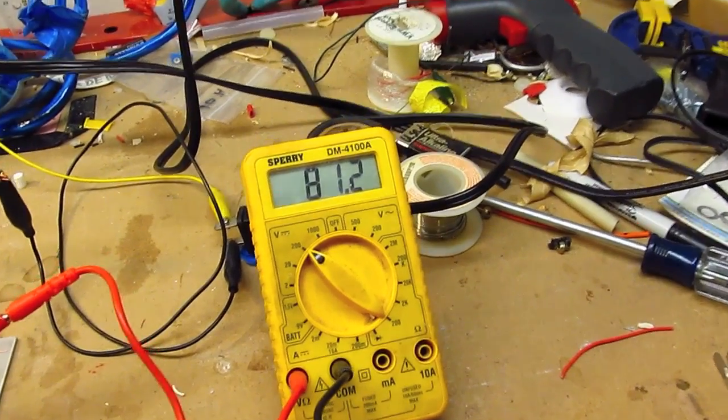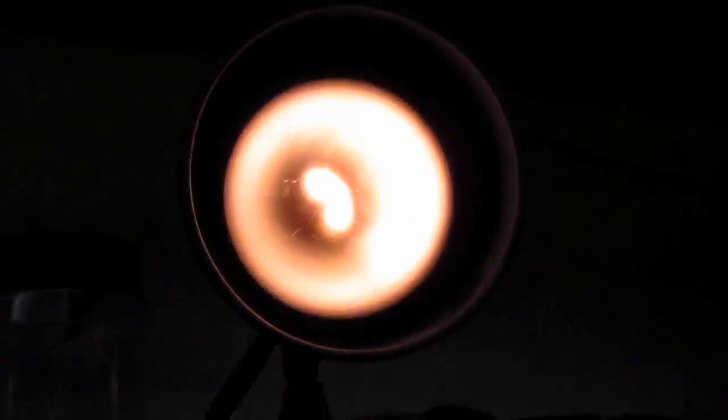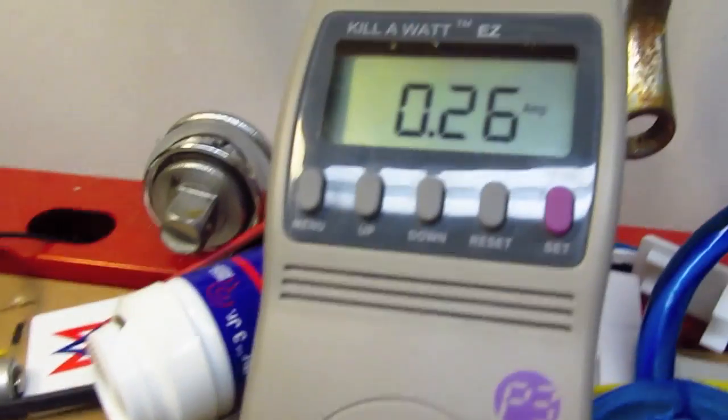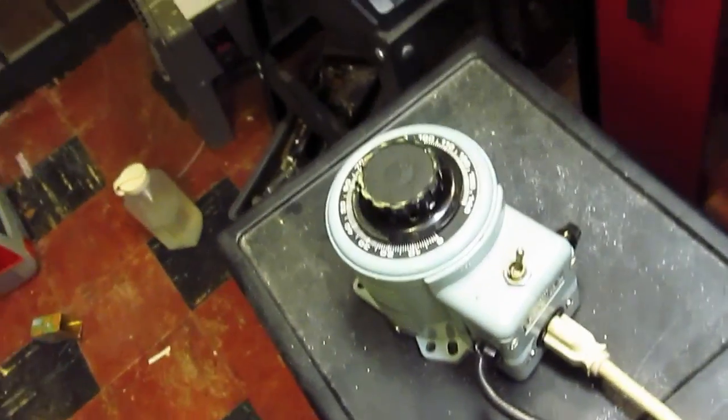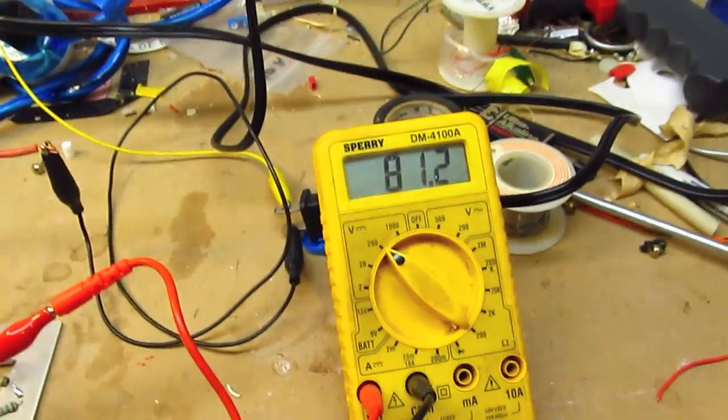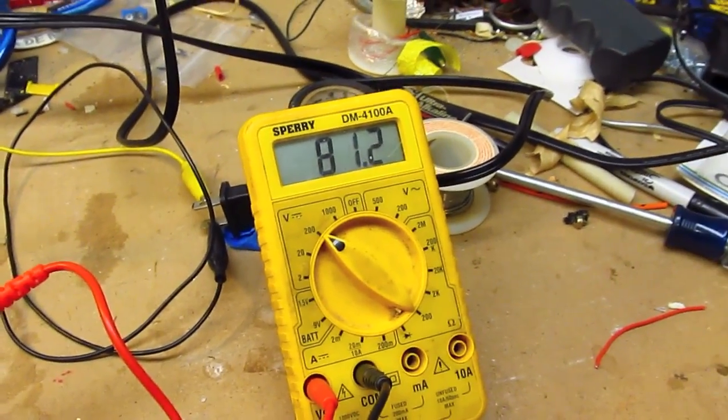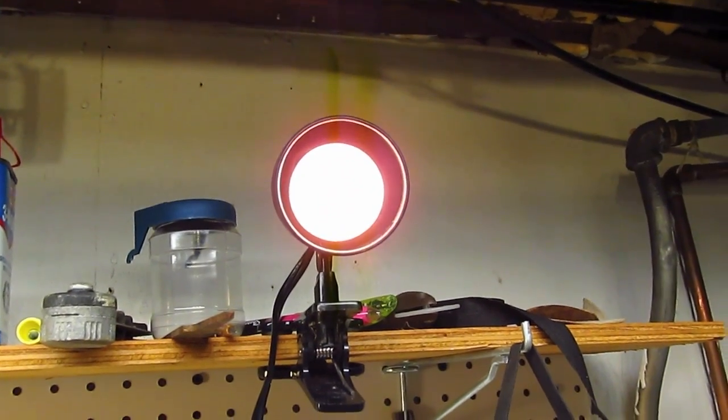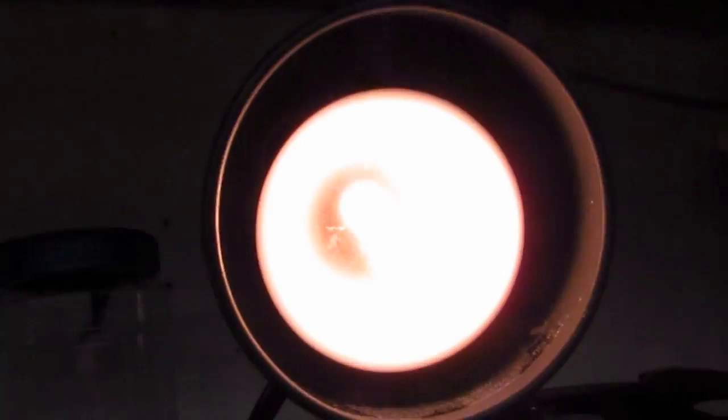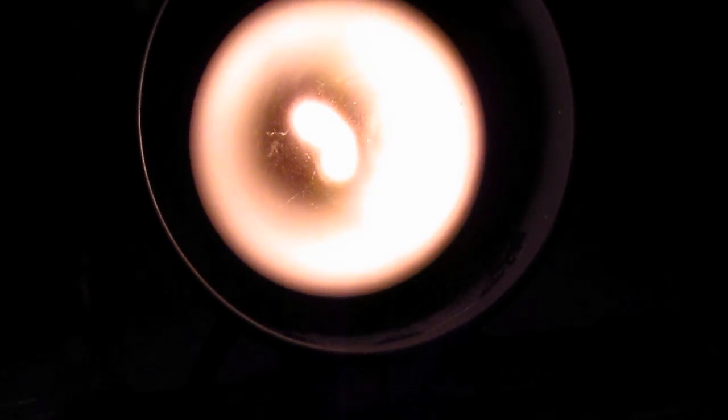Alright, 81.2 volts DC. The lamp is glowing a bit brighter. We got 0.26 amps being pulled from the mains by the variac. Raise the power a bit.